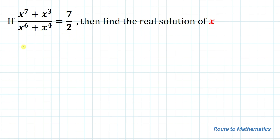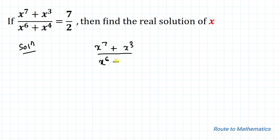Before going through the solution, please subscribe to my channel and click the bell icon for more such interesting videos. So let's start the solution. We have given x to the power 7 plus x cubed, divided by x to the power 6 plus x to the power 4, equals 7 by 2.